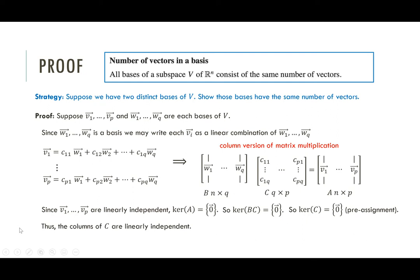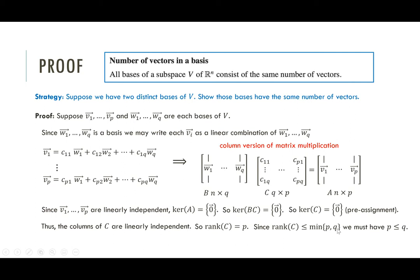The kernel of C being zero tells us that the columns of C are linearly independent. The rank of C therefore equals P — the number of columns — since all columns are linearly independent, giving a leading one in every column. But the rank of any matrix can't exceed the minimum of its number of rows and columns. Since P equals the rank of C, P must be less than or equal to Q.